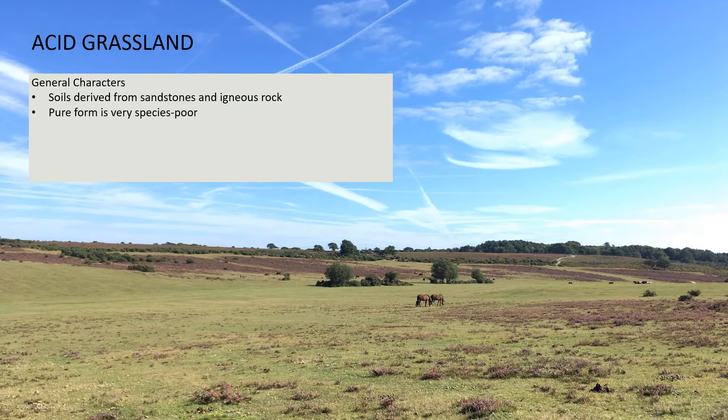Acid grassland is an interesting habitat because the pure form of it is typically very species poor — in marked contrast to calcareous grassland, where the best examples can have up to 40 species per square metre. In very pure stands of acid grassland, you can sometimes be lucky to find more than five species. The variation you tend to get is where management changes or where drainage and hydrology change — damper areas bring a different suite of species — but in terms of pure dry acid grassland it's not very species rich, and in a way this can make it appear quite dull sometimes.